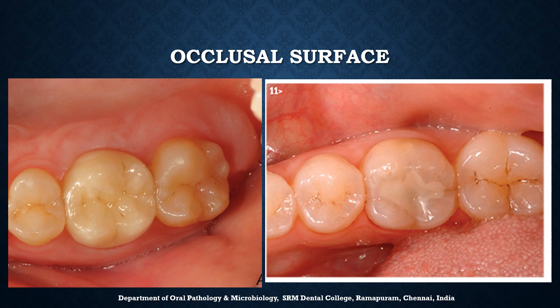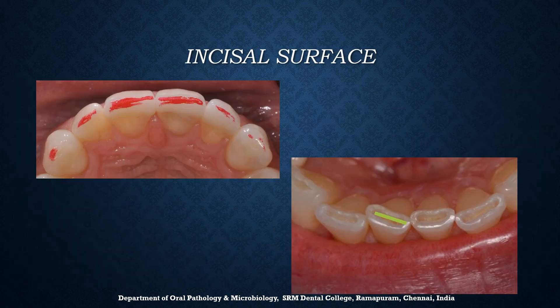The surfaces of the premolars and molars that come in contact with those in the opposite jaw during the act of closure are called occlusal surfaces. We can see the occlusal surface of both the maxillary and mandibular teeth. The same surfaces present in the incisors and canines are called incisal surfaces.